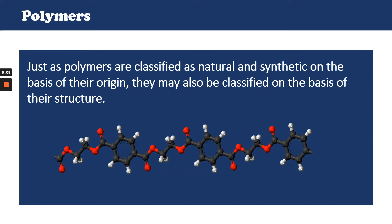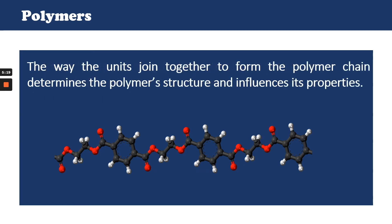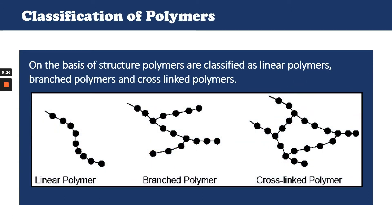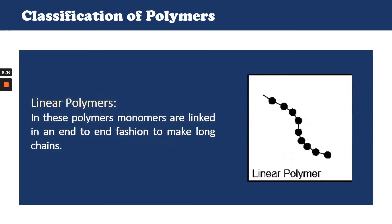Just as polymers are classified as natural and synthetic on the basis of their origin, they may also be classified on the basis of their structure. The way the units join together to form the polymer chain determines the polymer structure and its properties. On the basis of structure, polymers are classified as linear polymers, branched polymers, and cross-linked polymers. Linear polymers are those where the monomers are linked in an end-to-end fashion making long chains. Teflon is an example of a linear polymer. When formed, linear polymers create strands of fibers and they may be used to form a mesh-like structure that can be very strong and hard to break.